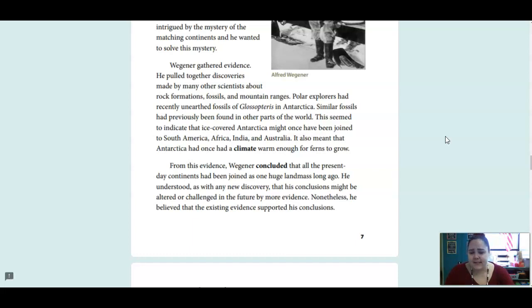Polar explorers had recently unearthed fossils of Glossopteris in Antarctica. Similar fossils had previously been found in other parts of the world. This seemed to indicate that the ice-covered Antarctica might once have been joined to South America, Africa, India, and Australia. It also meant that Antarctica once had a climate warm enough for ferns to grow. From this evidence, Wegener concluded that all the present-day continents had been joined as one huge landmass long ago. He understood, as with any new discovery, that his conclusions might be altered or challenged in the future by more evidence. Nonetheless, he believed that the existing evidence supported his conclusions.